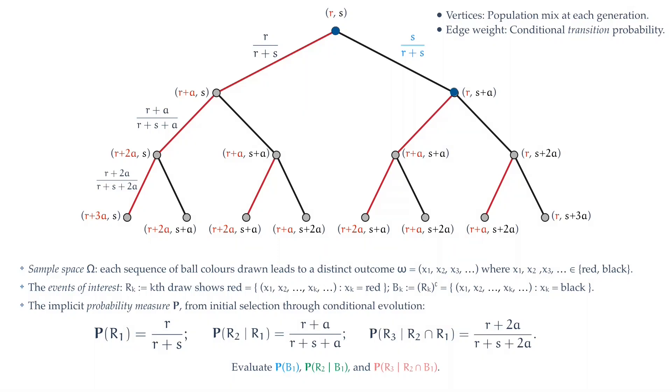Now, given that you've got a black ball, remember, now the population mix is R and s plus a. What is the chance that you now obtain a red ball? Well, this is the conditional probability of R2 given B1. And again, just by looking at the population mix, you have R and s plus a. The chance of getting a red is R over R plus s plus a. And again, you see that on the edge.